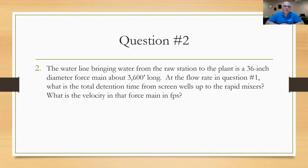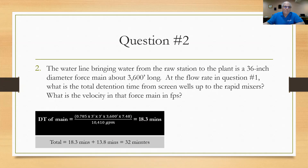Question number two: The water line bringing raw water from the raw water station to the water treatment plant — about 3,600 feet away — is a 36-inch diameter force main. At the 15 MGD flow rate from question one, what is the total detention time from the screen wells up to the rapid mixers? The detention time of that force main was calculated using 0.785 times diameter squared times 3,600 feet, converted to gallons and divided by the flow rate, giving 18.3 minutes. Adding that to the 13.8 minutes gives about 32 minutes total detention time.